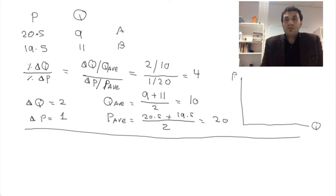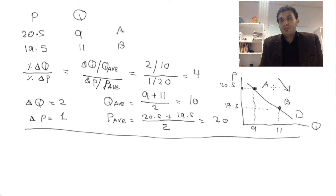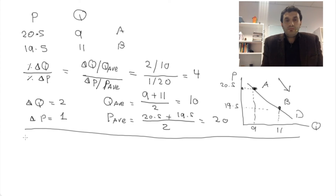Here's the demand curve for pizza with the two points we're looking at. At a price of 20.5, quantity demanded was 9. When the price dropped, quantity demanded became 11. We moved from point A to point B on the demand curve due to the price change, so A is our original price and original quantity.